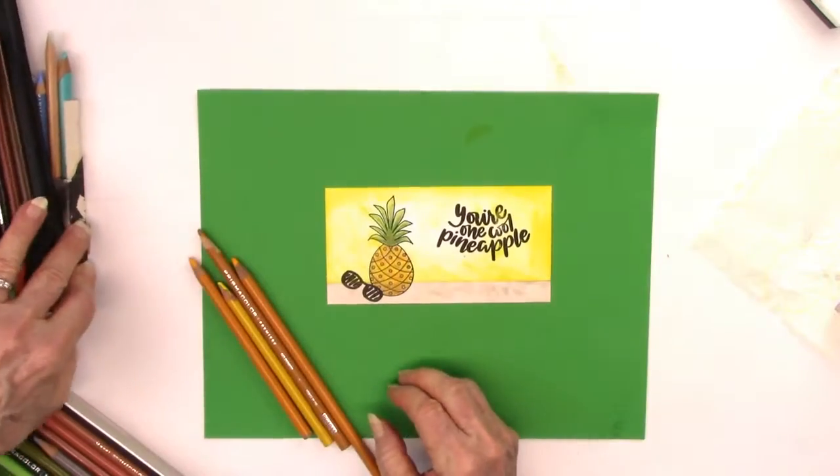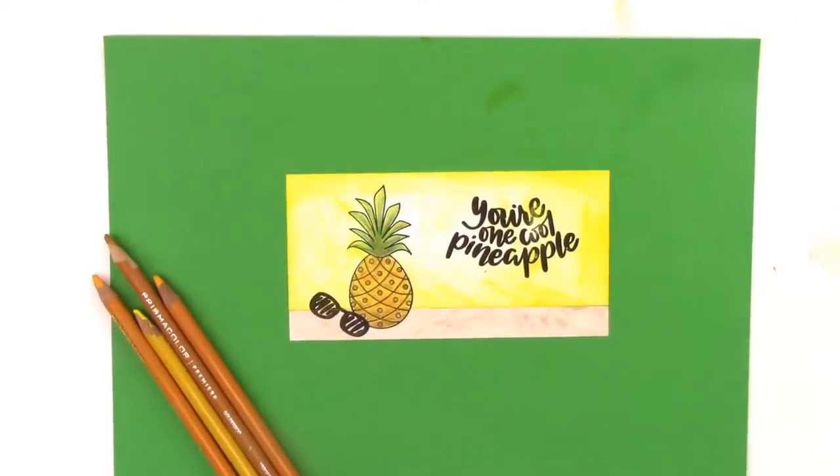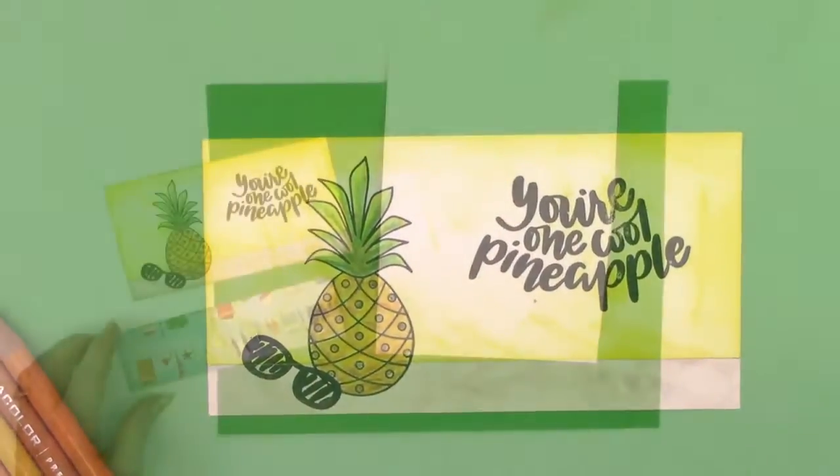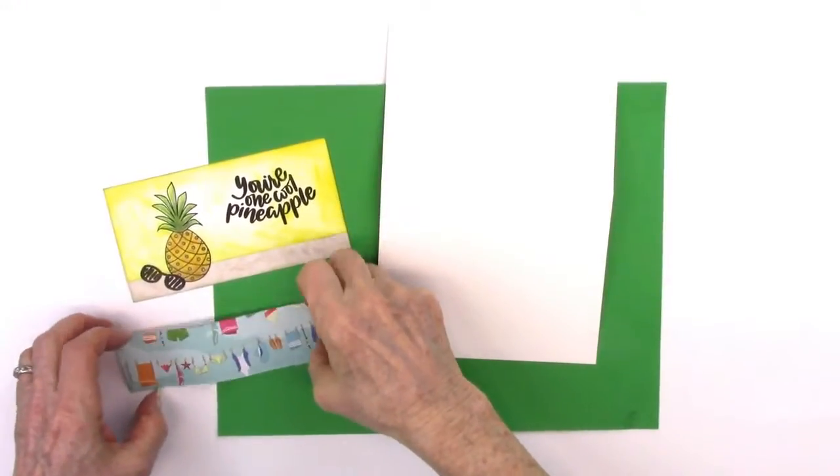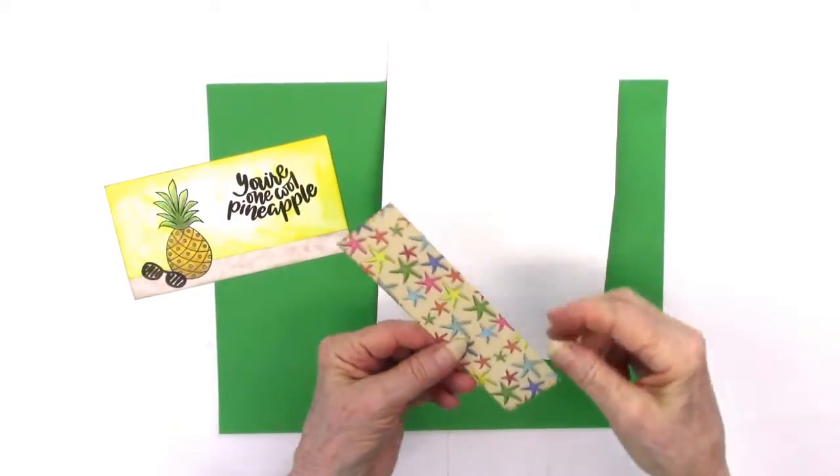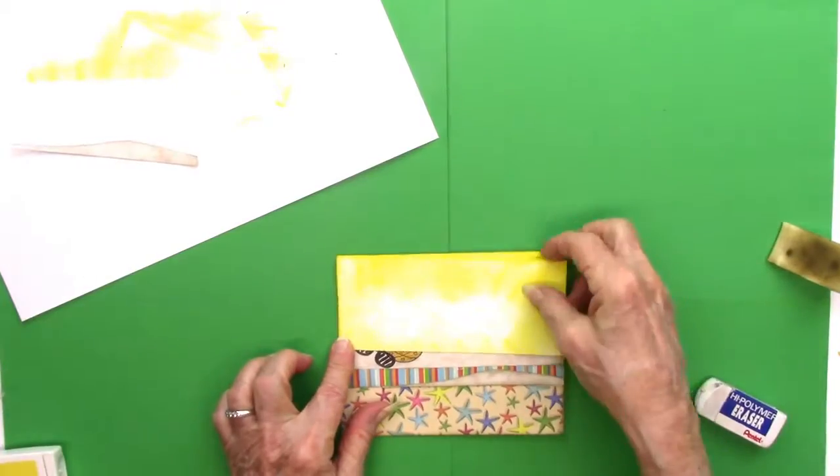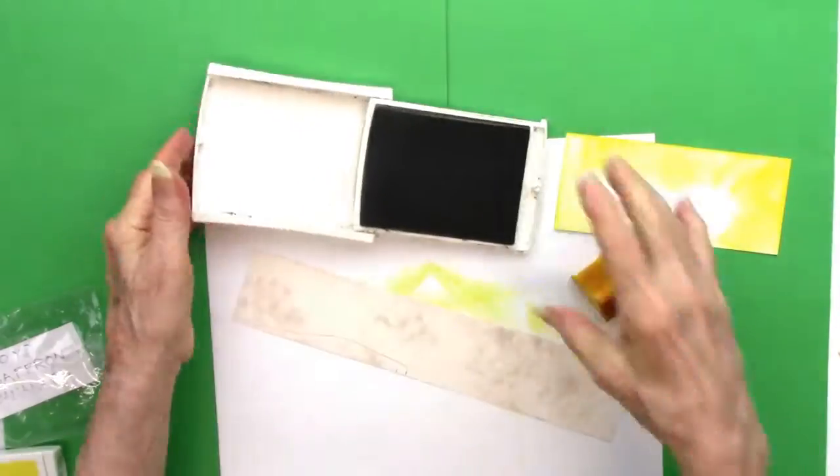And ready to go and be attached to the bottom part of the card. So I put glue, the Tombow Mono Multi Repositionable Glue, goes on white. When it dries it dries clear and then you can pull it up or down. I went ahead and glued that down.